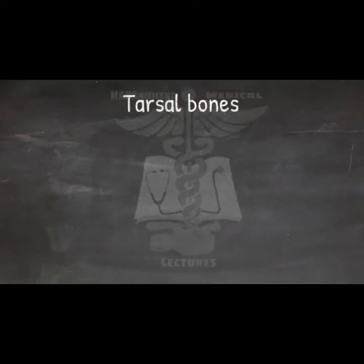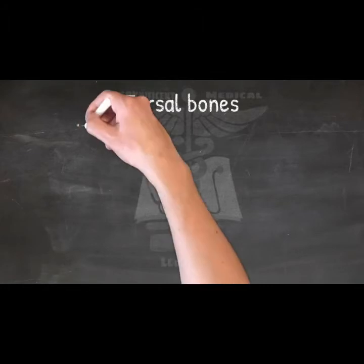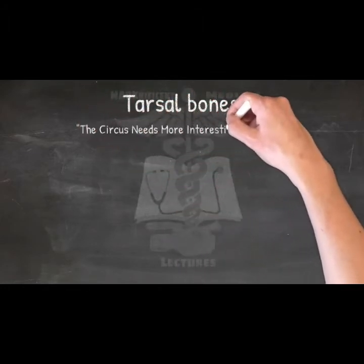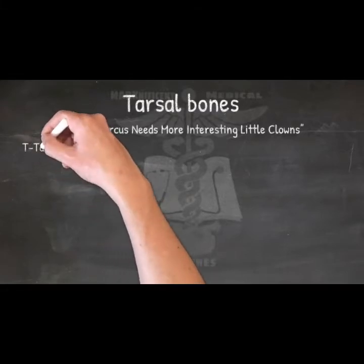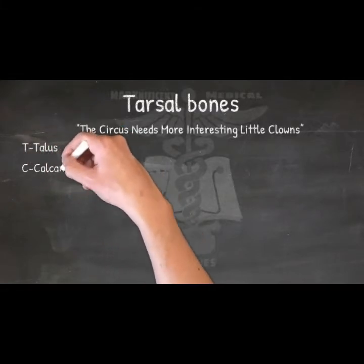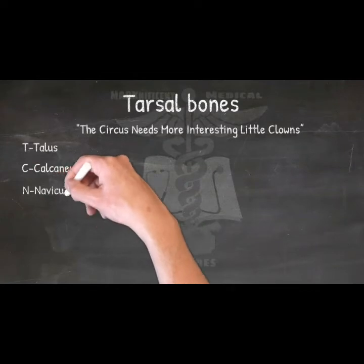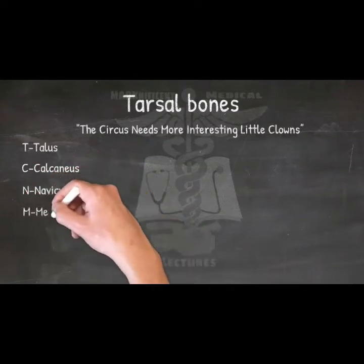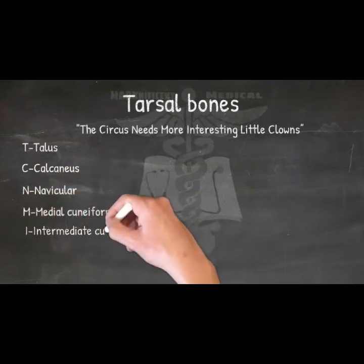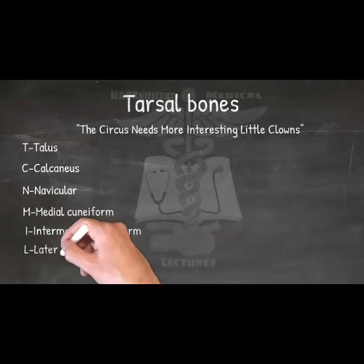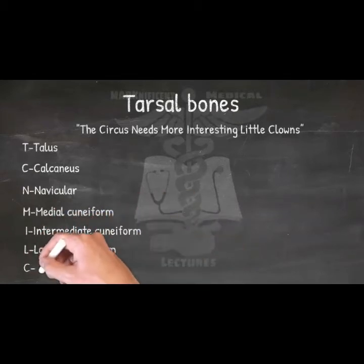Tarsal bones — mnemonic: 'The Circus Needs More Interesting Little Clowns.' In order, superior to inferior, medial to lateral on the right foot: Talus, Calcaneus, Navicular, Medial cuneiform, Intermediate cuneiform, Lateral cuneiform, and Cuboid.